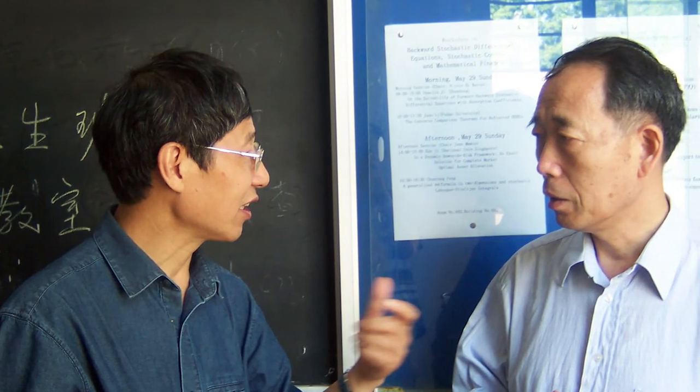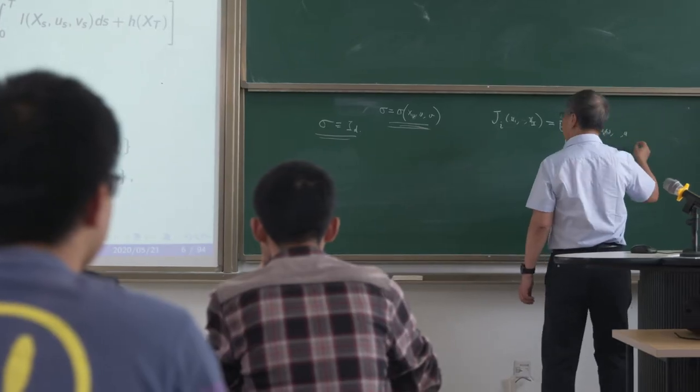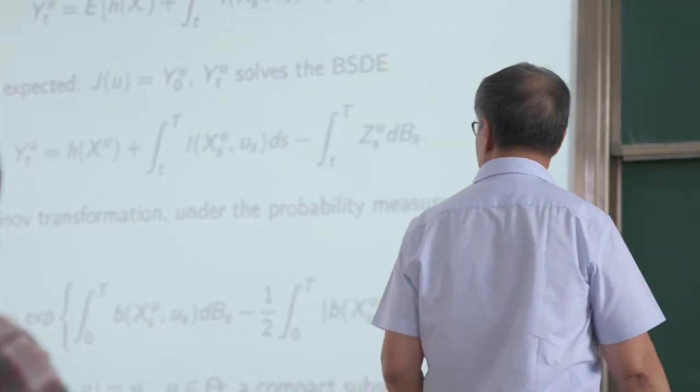Later, Peng proposed the idea of non-linear expectations to deal with uncertainty and probability distribution itself. We find that a higher level of uncertainty can be solved by introducing non-linear expectation. The more the uncertainty of probability, the stronger the non-linear expectation. We find that this can be more fundamental to treating many important situations.